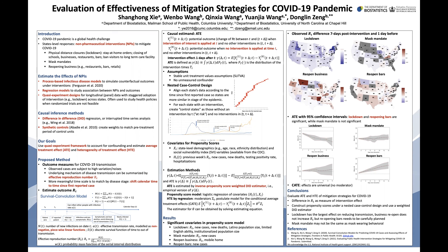In our proposed method, the outcome measure is the effective reproduction number R_T, which summarizes the underlying mechanism of disease transmission. We also shift the calendar time to time since the first reported case to make the time scale more meaningful. To estimate our outcome R_T, we use our proposed survival convolution model.